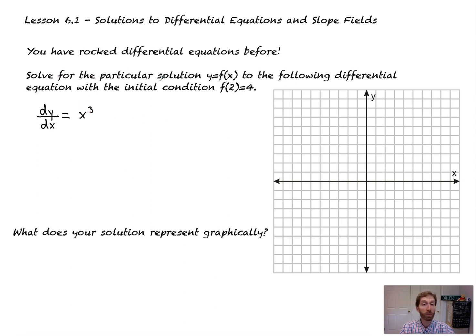So this says, solve for the particular solution, y equals f of x, to the following differential equation, with the initial condition f of 2 equals 4. So here's the thing. We know that solving a differential equation means to get the function that came before it, right? Solve for y as a function of x. So how do we do that?